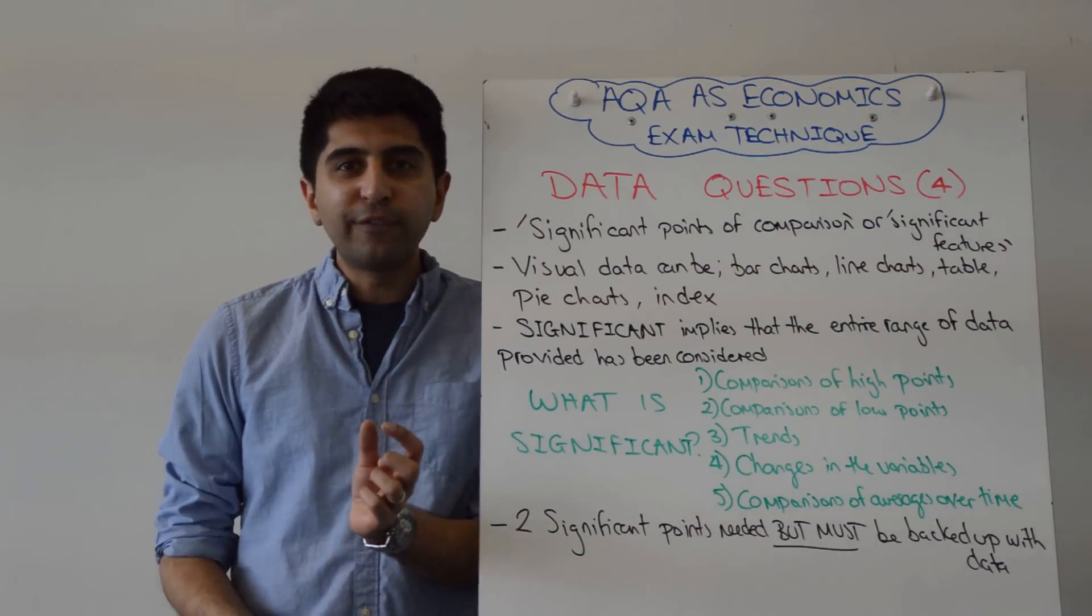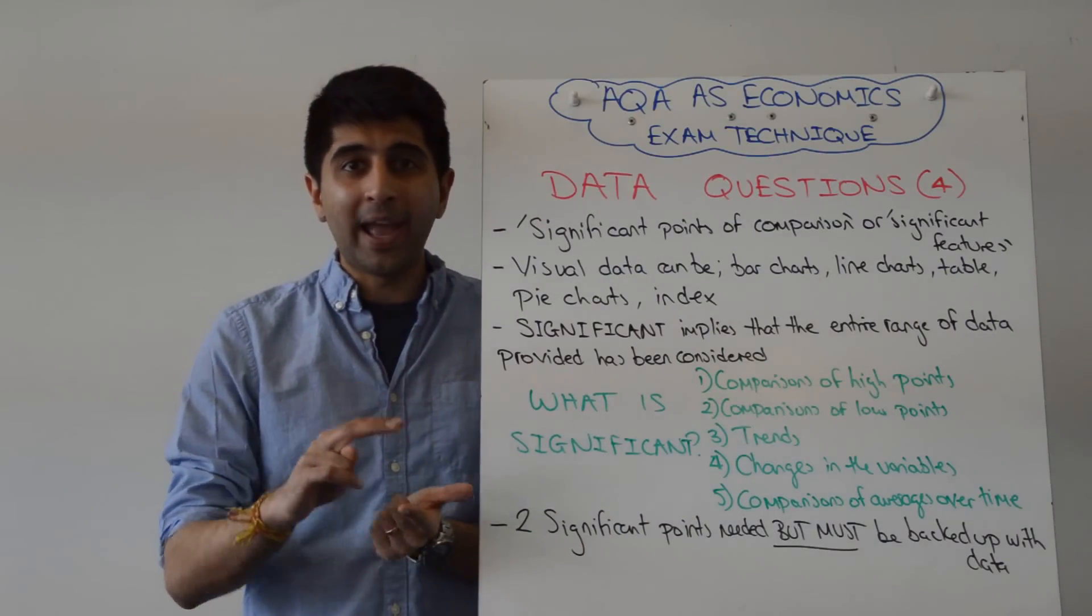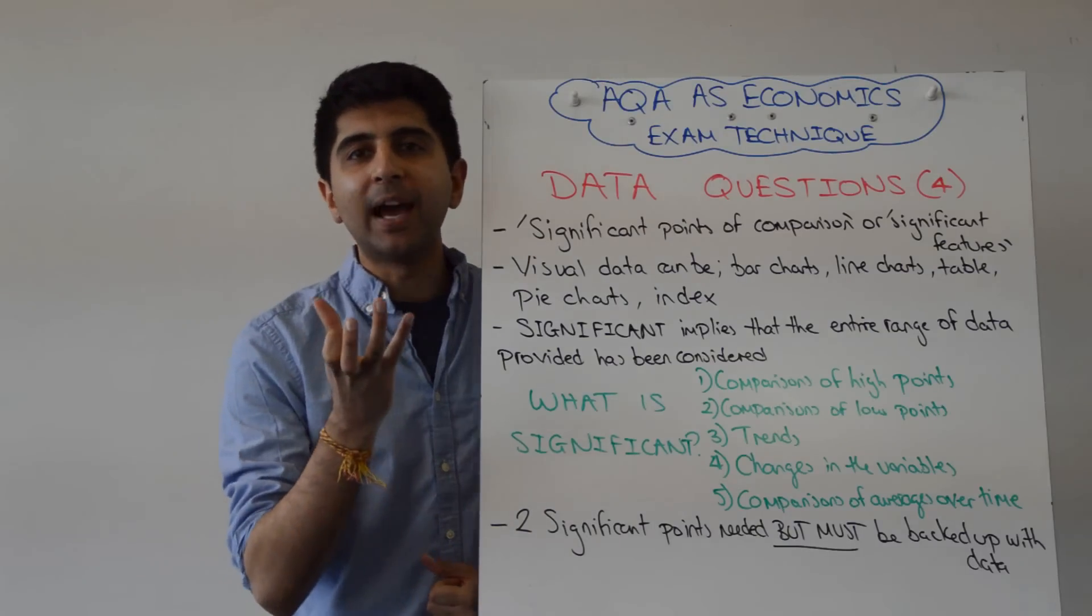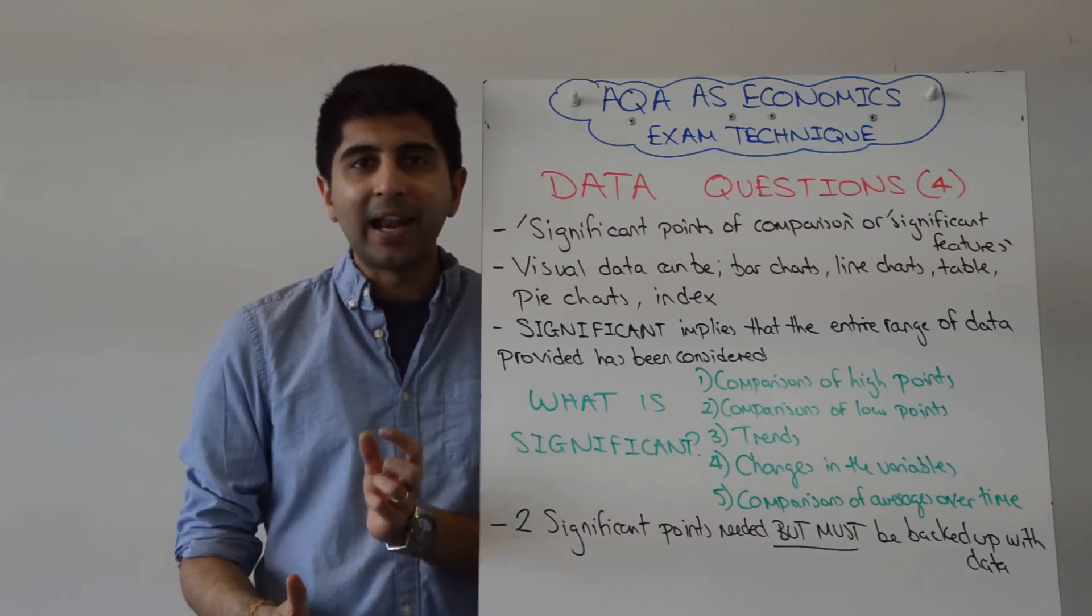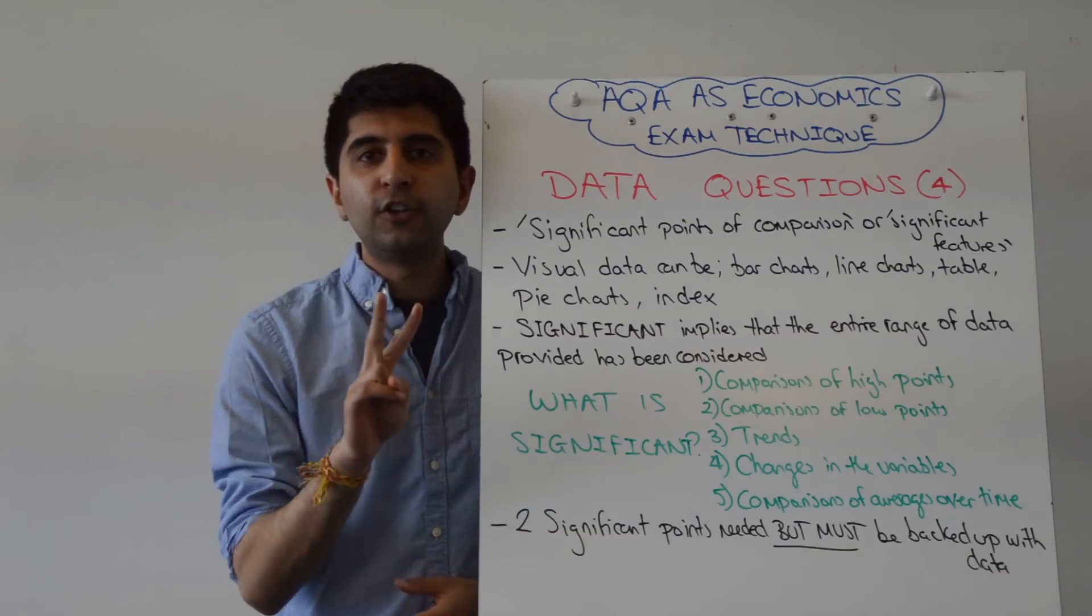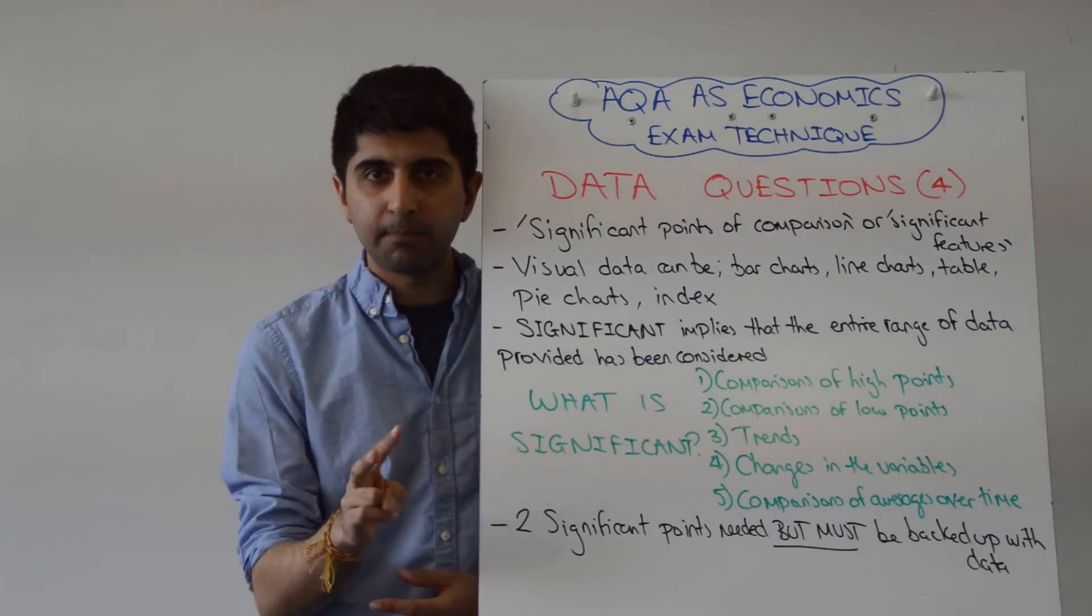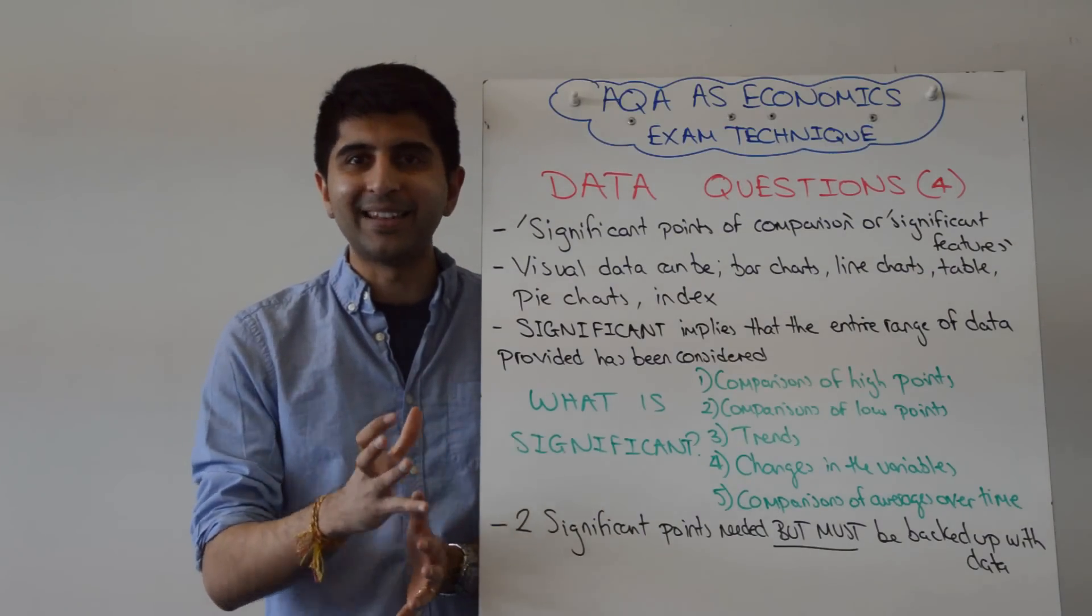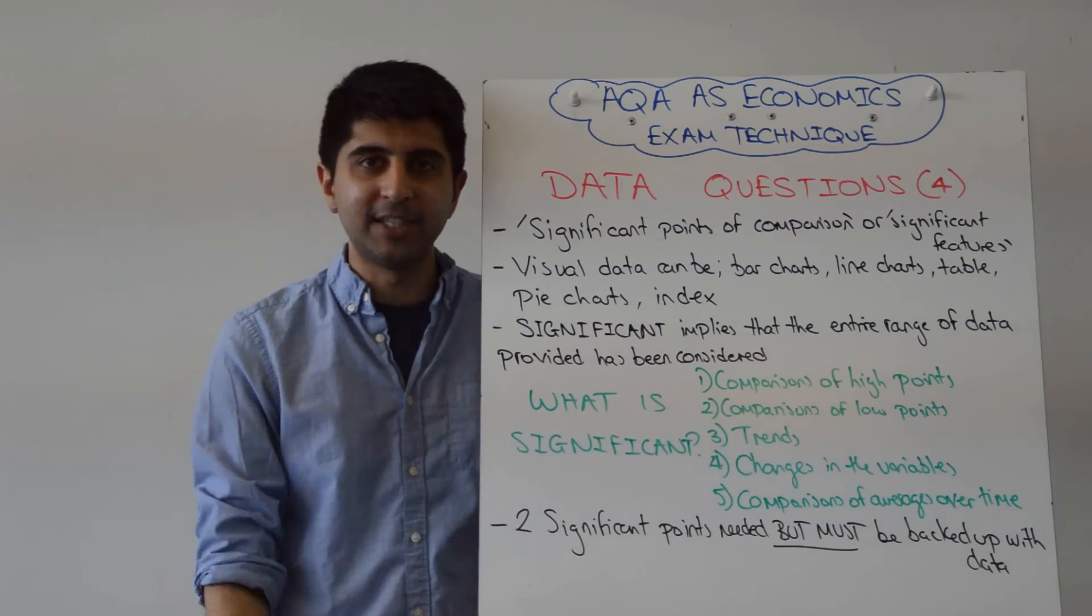Hi everybody. One of your four mark questions in your AS AQA micro and AS AQA macro paper will be a data question. In that question you will either have to identify two significant points of comparison or two significant features of a data set given to you in the extract material.